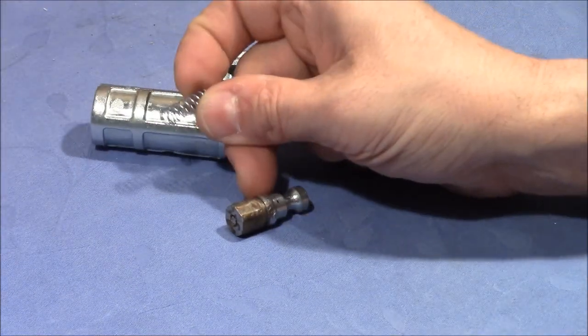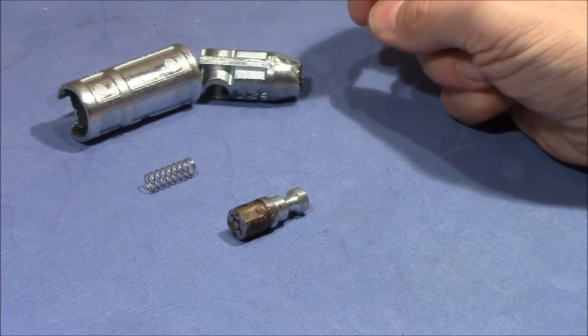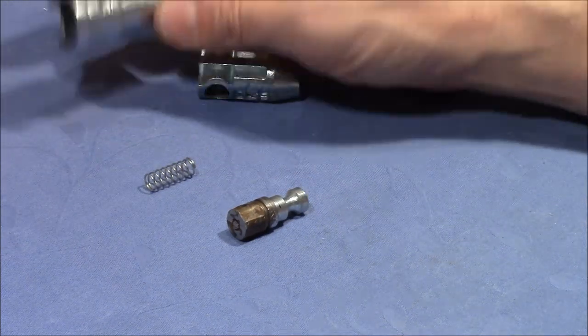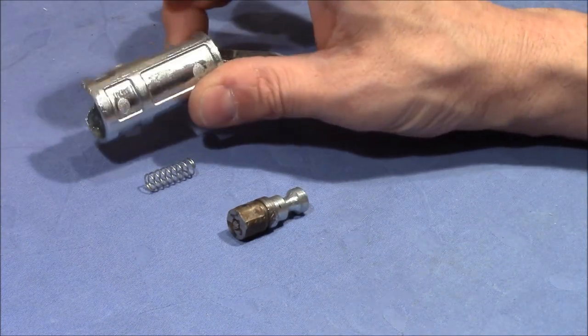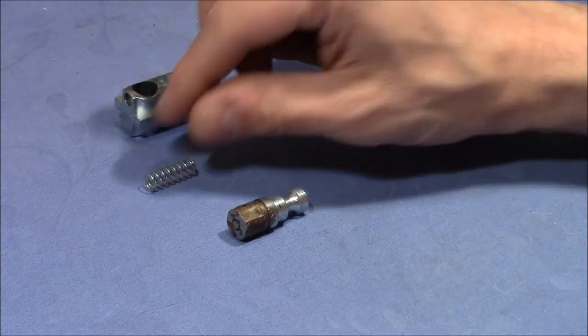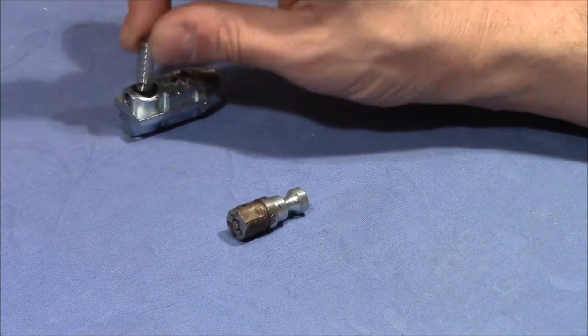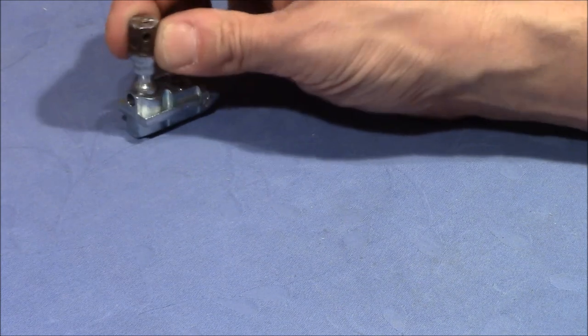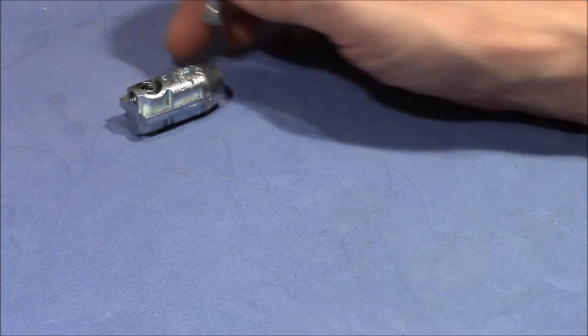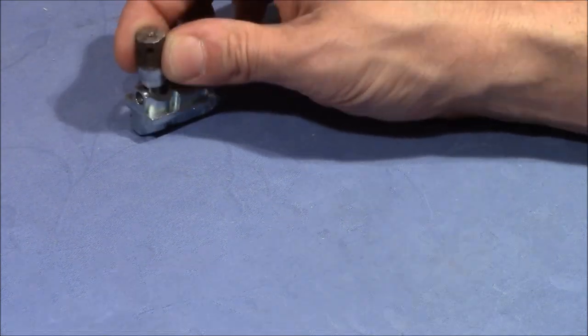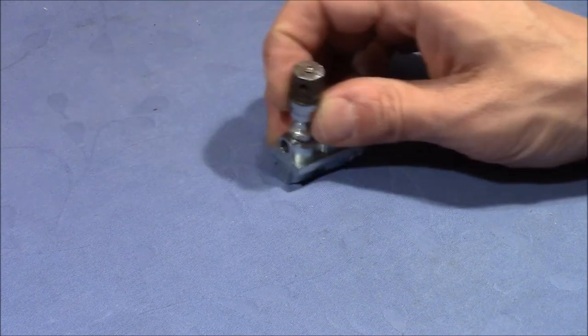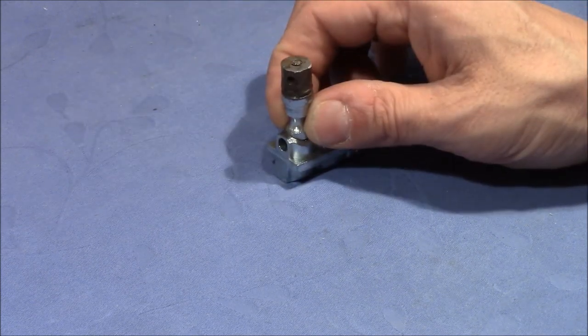That's how the spring looks like. I will put the outer sleeve away and I will try to shoot the bolt only with this configuration. Maybe we can get rid of some friction and see how much height we can get with this setup.